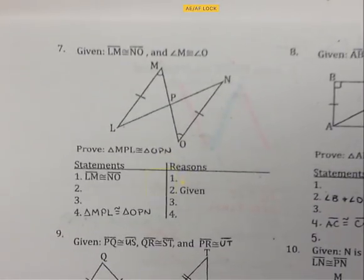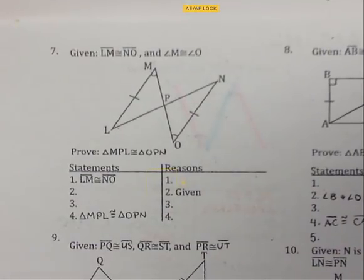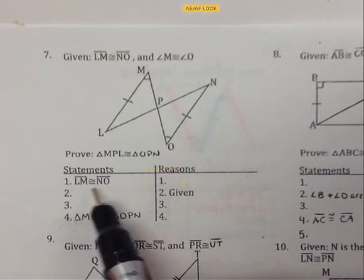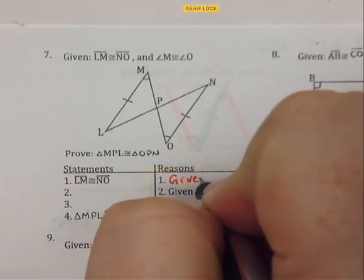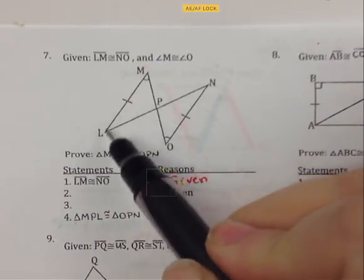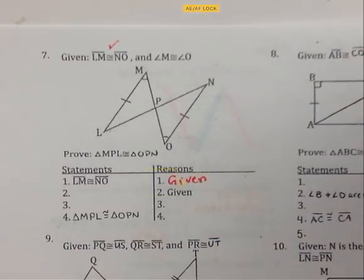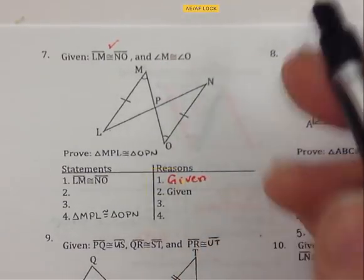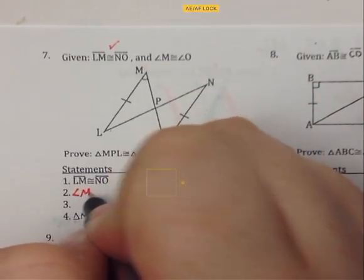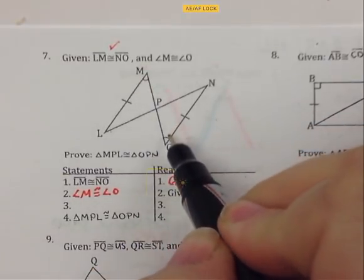This video is more examples of two-column proofs. The first statement is the givens. Segment LM is congruent to segment NO — the reason is given. It is marked with tick marks, so we can put a check mark because it's in our proof. Statement two: angle M is congruent to angle O because it is given. It is marked in our picture with arcs, so we can put a check mark.